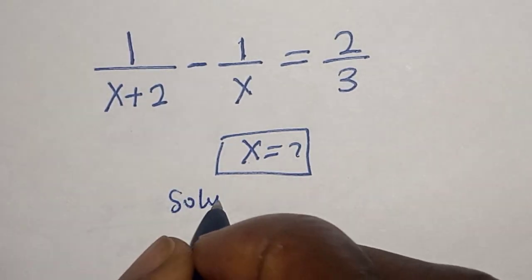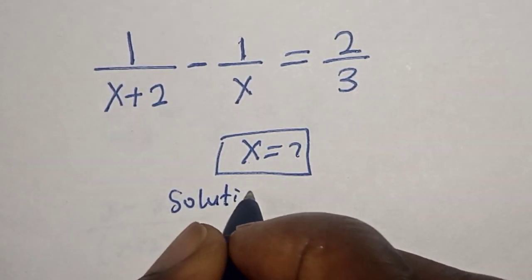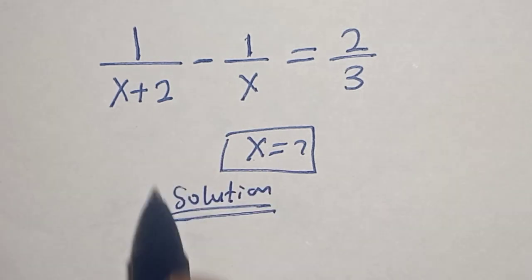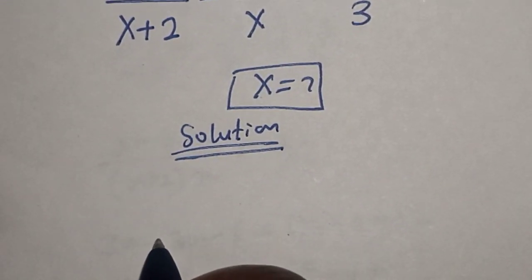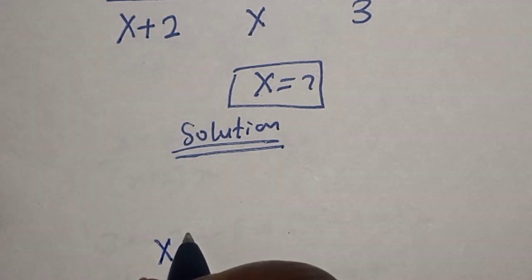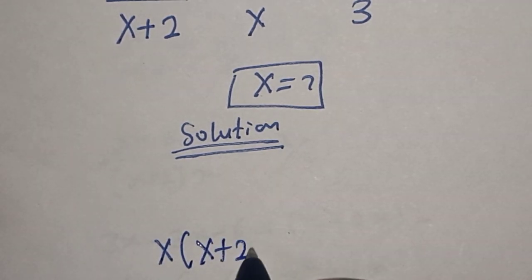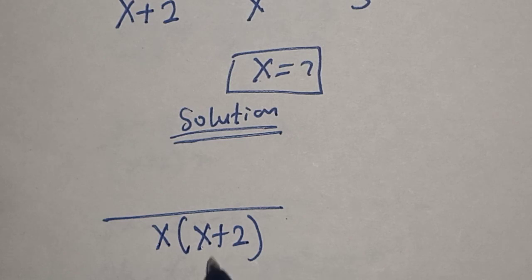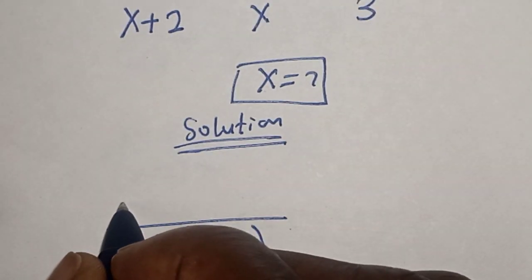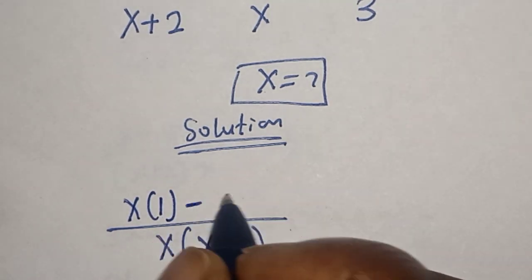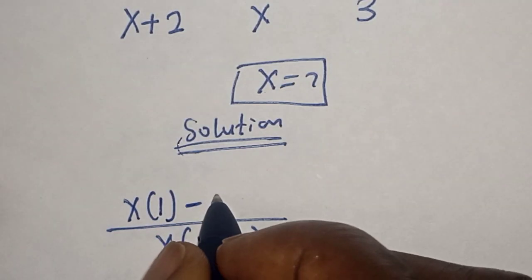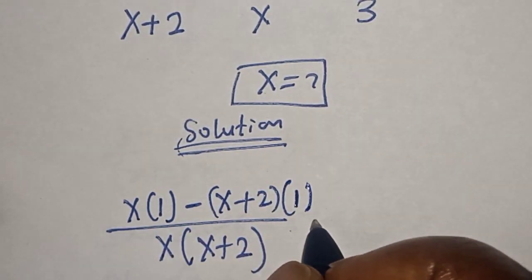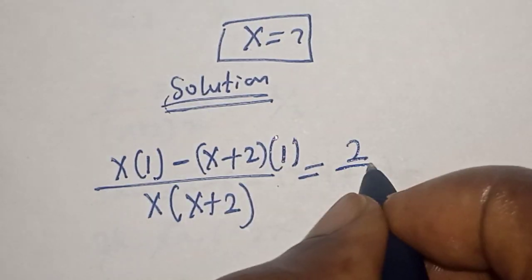Solution. Let's find the LCD of the left hand side first, because the LCD is x multiplied by x plus 2. Then x plus 2 divided by x multiplied by x plus 2. We have x multiplied by 1, minus x plus 2 multiplied by 1, is equal to 2 divided by 3.